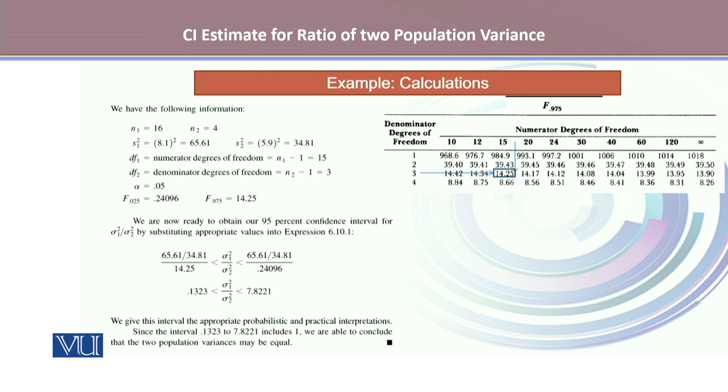Since the interval 0.1323 to 7.8221 includes 1, we are able to conclude that the two population variances may be equal.